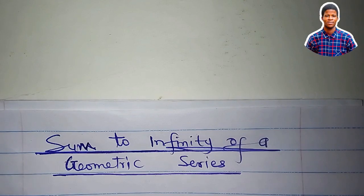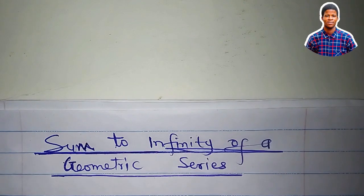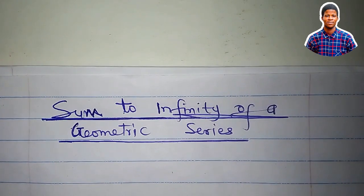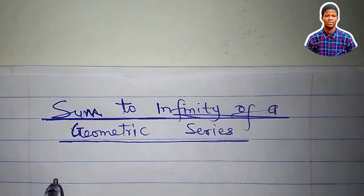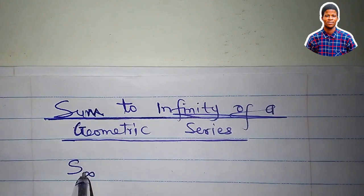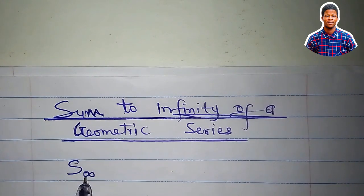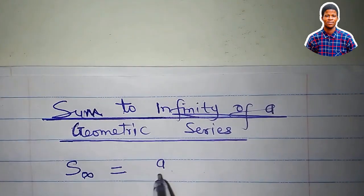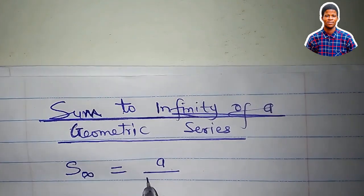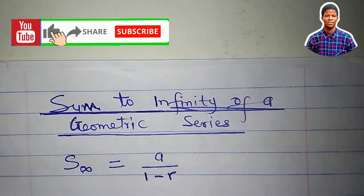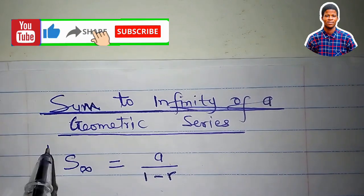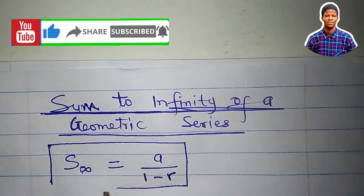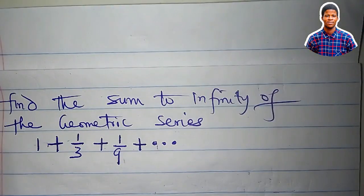Let's talk about the sum to infinity of a geometric series. The sum to infinity of a geometric progression is given by the formula: sum to infinity equals a divided by 1 minus r, where a is the first term and r is the common ratio. This formula must be noted.